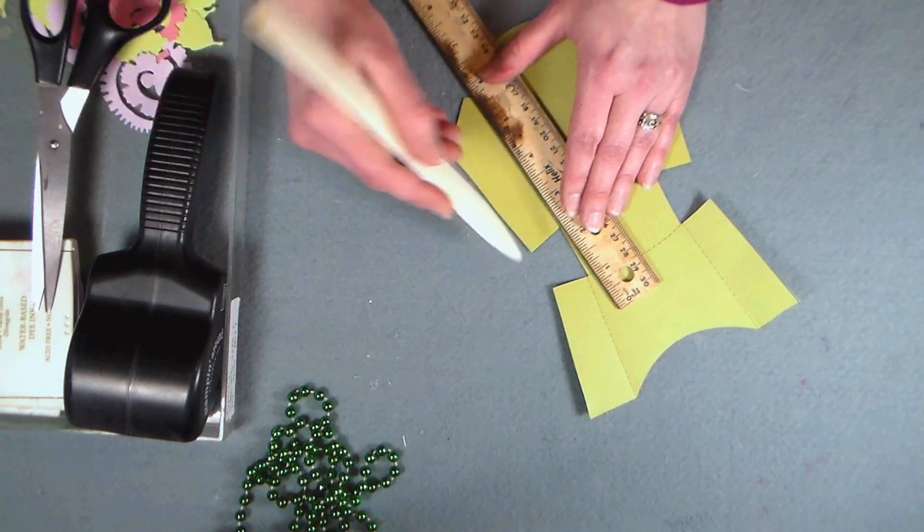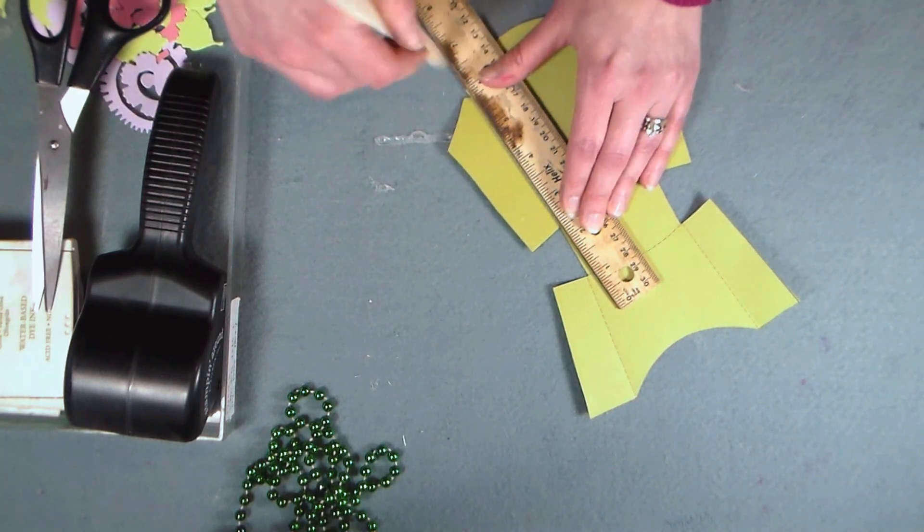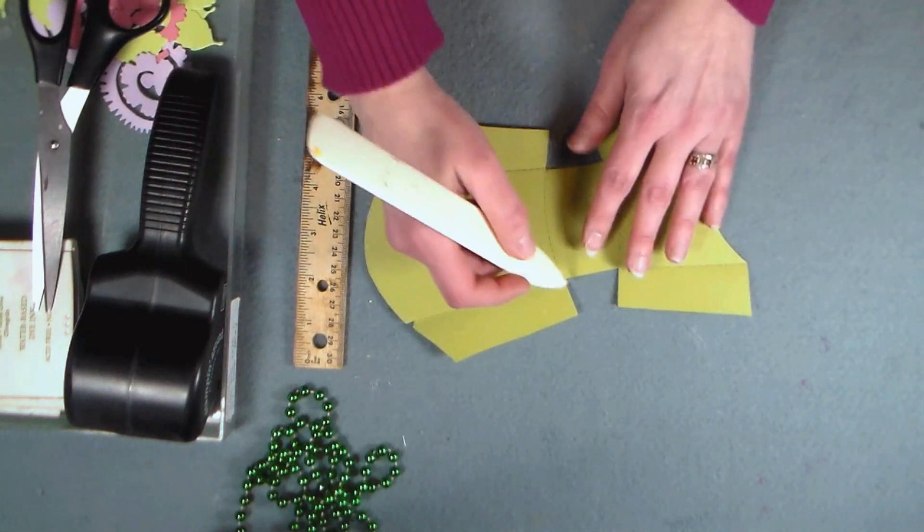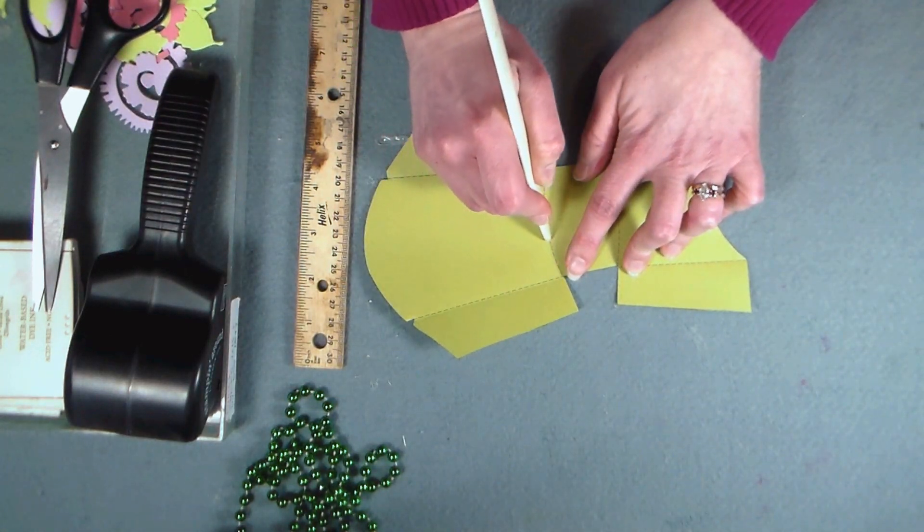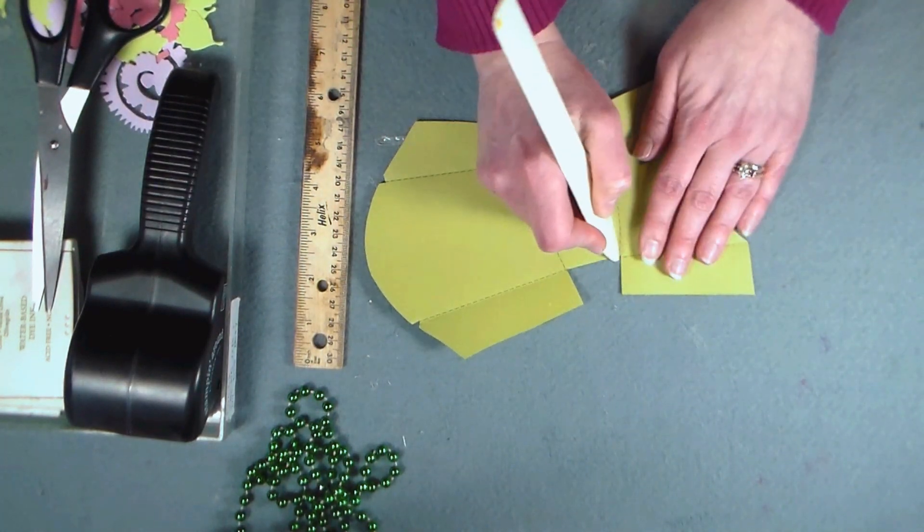Just go over all of those lines and then on the bottom you're going to notice that the lines are curvy. So just freehand those lines. This will really help when it comes time to fold the box.